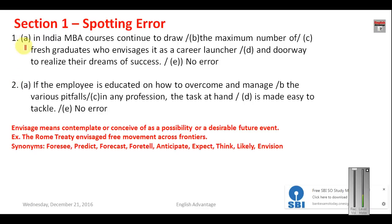Now let us get started. Question number one: 'In India, MBA courses continue to draw the maximum number of fresh graduates who envisage it as a career launcher and doorway to realize their dreams of success.' These kinds of sentences will come in your forthcoming exam — typical of banking and insurance exams. The questions are normally very lengthy but the mistake is very minor and subtle. The erroneous part is: after the plural noun 'graduates' we should write 'envisage'. Your answer here will be C.